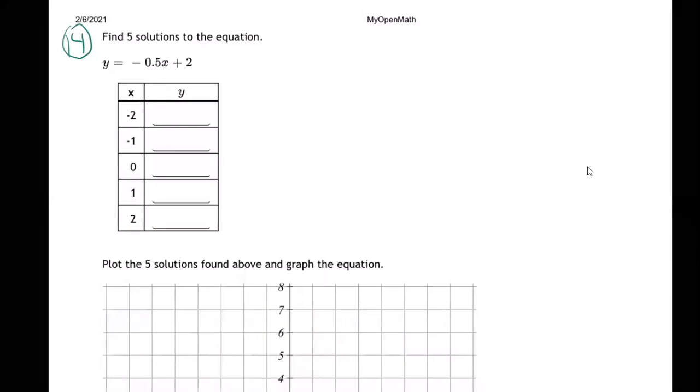Okay, so they're giving us an equation here and some x values to plug in. I'm just going to plug them in one at a time. I'll start up here with the first one. So y equals negative 0.5, and I'm going to plug in the x value negative 2 and then just hit the buttons on your calculator.